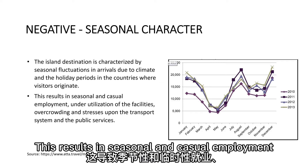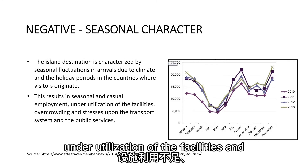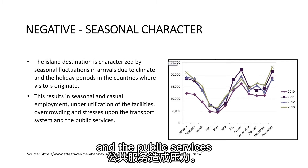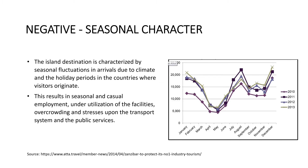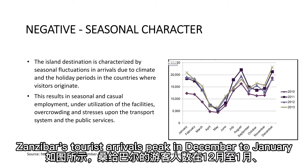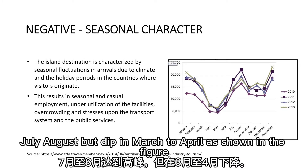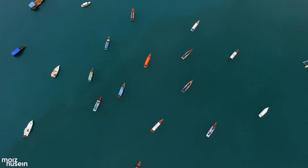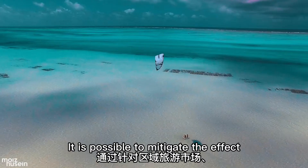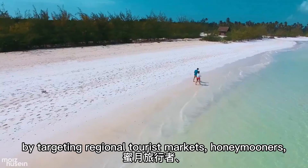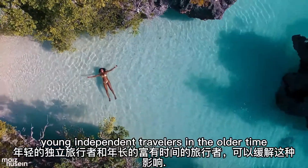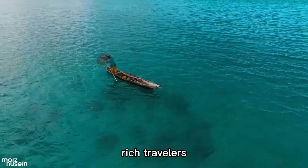Many islands are developed by the tourism sector only for seasonal tourism. This is the case in Zanzibar, where tourism is characterized by seasonal fluctuations in arrivals due to climate and holiday periods in the countries where visitors originate. This results in seasonal and casual employment, underutilization of facilities, and overcrowding and stresses upon the transport system and public services. Zanzibar's tourist arrivals peak in December to January and July to August but dip in March to April. It is possible to mitigate the effect by targeting regional tourist markets, honeymooners, young independent travelers, and older time-rich travelers.